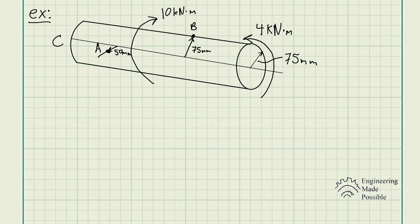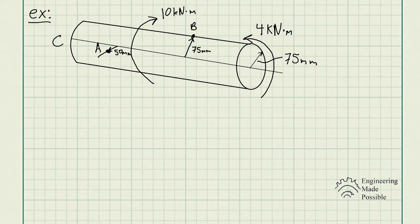The problem statement: a solid shaft is fixed to the support at C and subject to the torsional loading shown. Determine the shear stresses at points A and B. We have a torque of 10 kN·m applied near the center and another torque of 4 kN·m at the very end in the opposite direction. Point A is 50 millimeters from the center of the rod, and point B is at the surface — 75 millimeters from the center, since the radius is 75 millimeters.